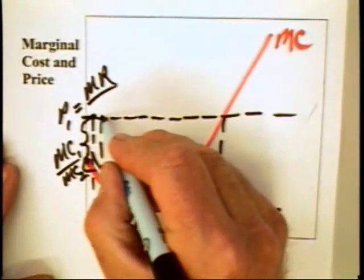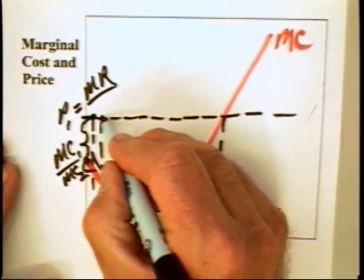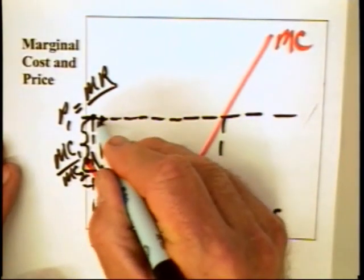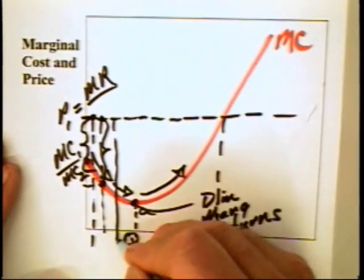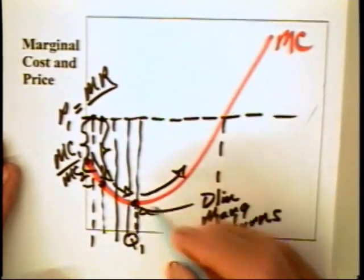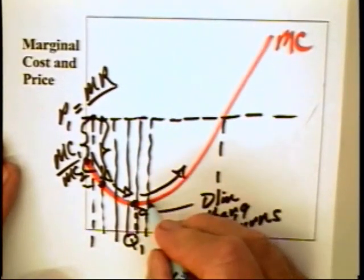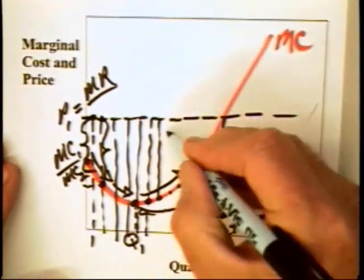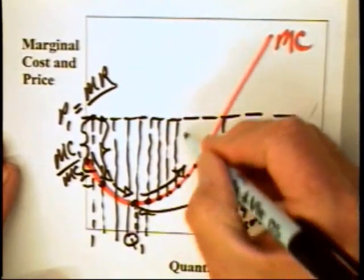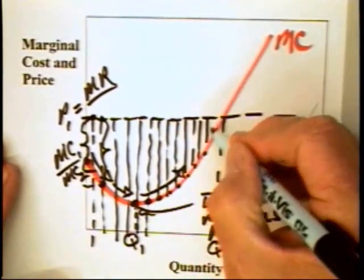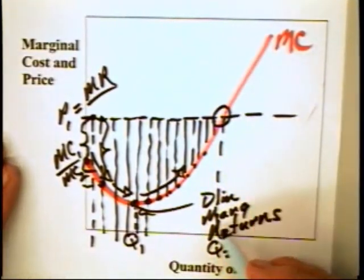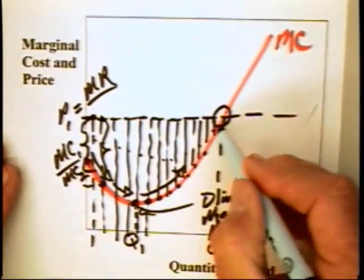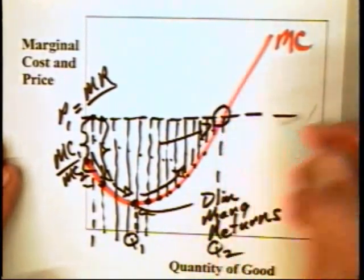Now, on the second unit, the firm gets a marginal revenue or price equal to P1. The marginal cost falls because of the benefits of specialization labor. There's even more profit to be made. There's profit to be made on these units, this unit, and even on this unit. The marginal cost of production is, of course, rising at this point and continues to rise. But notice that the price exceeds the marginal cost of each of these units, all the way up to a quantity of Q2. So, profits are rising.